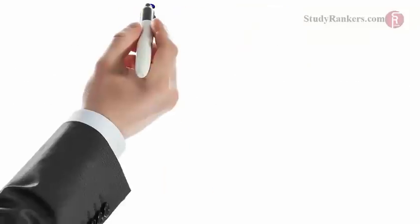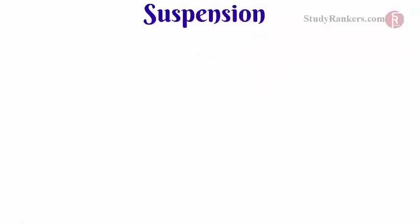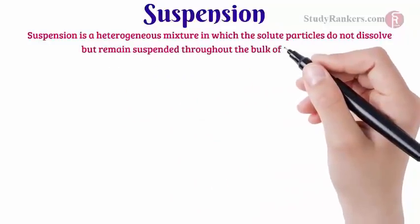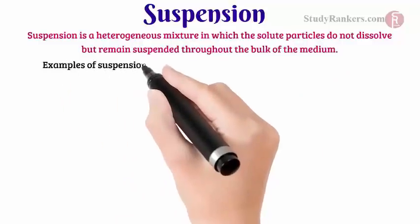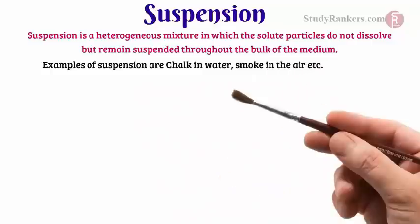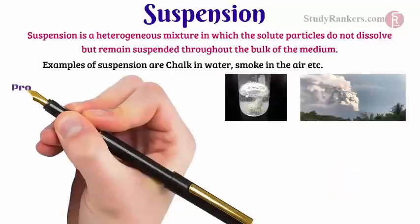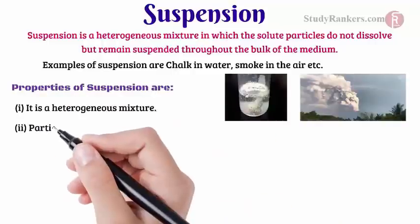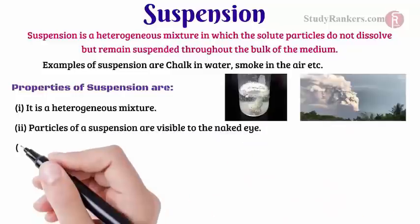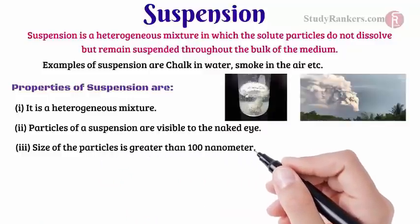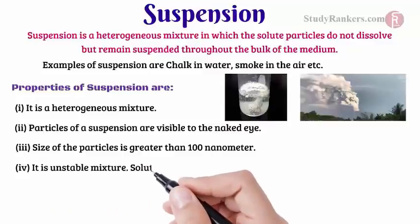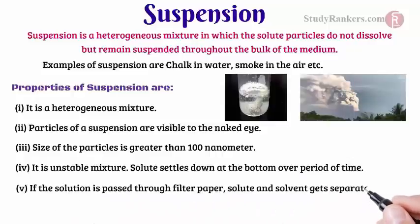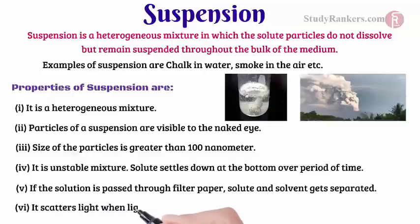Our last topic in mixtures is suspension. A suspension is a heterogeneous mixture in which the solute particles do not dissolve but remain suspended throughout the bulk of the medium. Examples of suspensions are chalk in water, smoke in the air, etc. Properties of suspension: it is a heterogeneous mixture; particles of suspension are visible to the naked eye; size of the particles is greater than 1 nanometer; it is an unstable mixture; solutes settle down at the bottom over a period of time; if the solution is passed through filter paper, solute and solvent get separated; and it scatters light, showing the Tyndall effect.